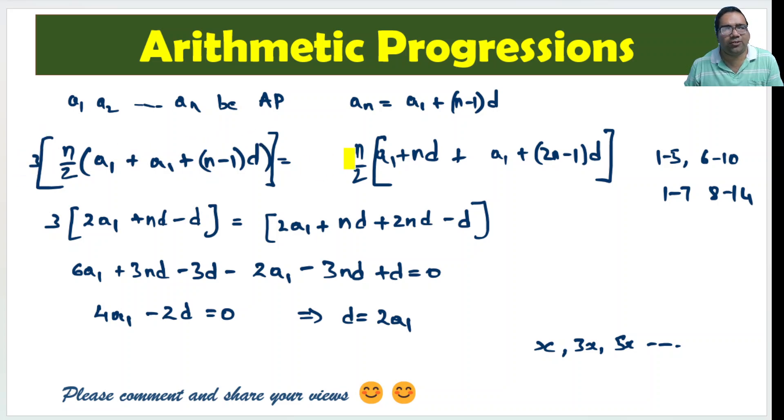Is equal to, 3 times of this is equal to sum of next n terms. Next n terms. That means, starting from nth term, n plus 1, n plus 2, n plus 3, n plus 4. Up till the next n terms. For example, first 5 terms versus 6 to 10. Or first 1 to 7 versus 8 to 14.